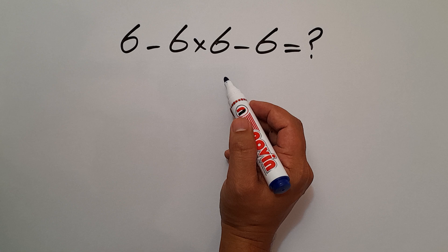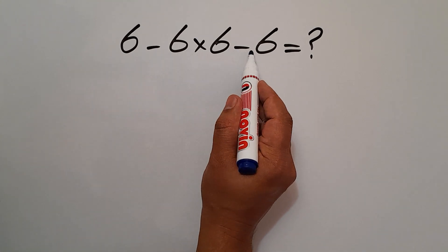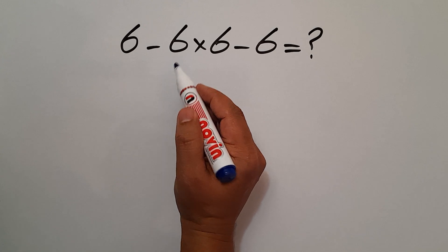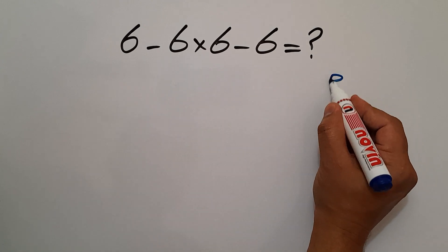Let's go. To start, in this expression, we have two subtractions and one multiplication. According to the order of operations, which is PEMDAS,